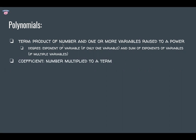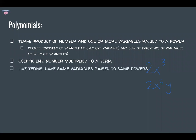The coefficient of a term is the number being multiplied — so the coefficient is 2 in both cases. Like terms have the same variables raised to the same powers. A like term to 2x cubed would be 5x cubed or negative 5x cubed. For 2x cubed y, a like term would be negative 5x cubed y. Note that the term 0 is always a like term to everything, because it's basically 0 times x cubed or 0 times x cubed y.